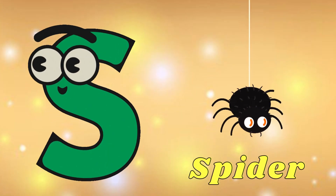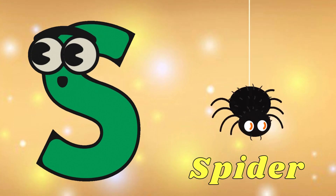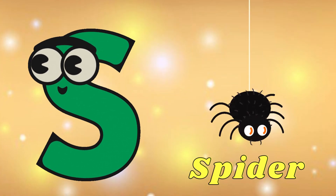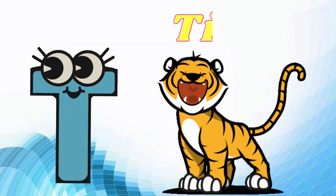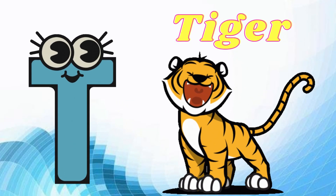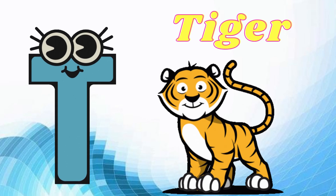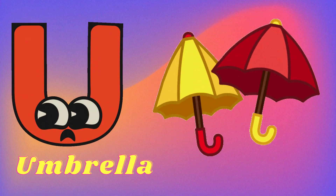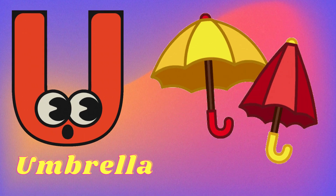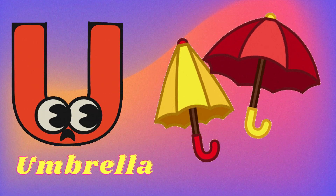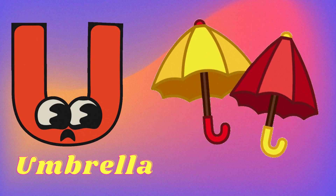S is for Spider. Spider, spider, X, spider. T is for Tiger. Tiger, tiger, T, tiger. U is for Umbrella. A-a-umbrella, a-a-umbrella, U, umbrella.